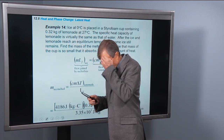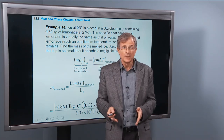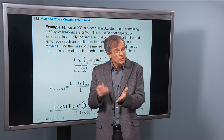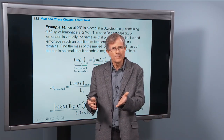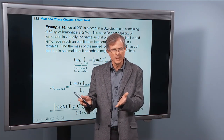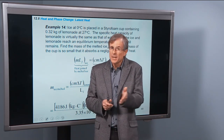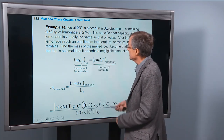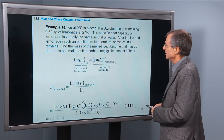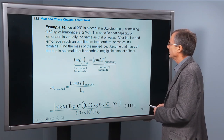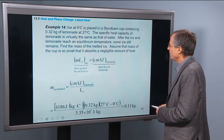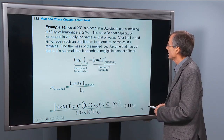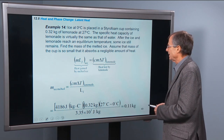Remember that the latent heat of fusion applies at 0°C. So if you want to take ice at negative 30°C and heat it up to 0°C, you're not changing the phase of the material — you have to use the specific heat capacity to figure out how much energy it takes to bring it up to 0°C. Here's a good example: ice at 0°C is placed in a Styrofoam cup containing 0.32 kilograms of lemonade at 27°C. The specific heat capacity of lemonade is virtually the same as water. After the ice and lemonade reach an equilibrium temperature, some ice still remains. Find the mass of the melted ice.